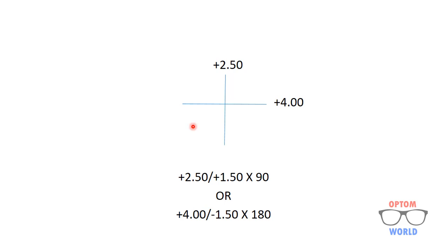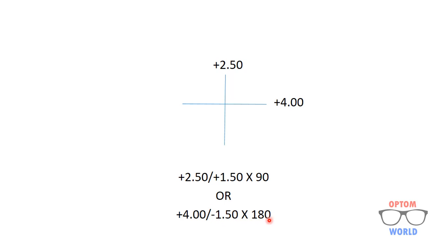Now we calculate the prescription from this optical cross. If we consider plus two point five zero as the sphere, the difference between plus two point five zero and four is one point five zero, so the cylinder is plus one point five zero. Since we are moving towards the more positive side, the cylinder sign is also positive, at 90 degrees. So the net prescription is plus two point five zero sphere with plus one point five zero cylinder at 90 degrees.